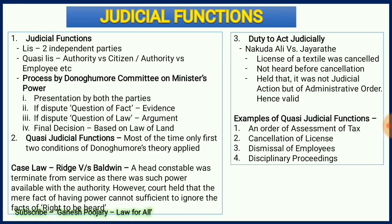The third category of functions is judicial functions. Three important aspects are: judicial functions, quasi-judicial functions, and duty to act judicially. There are two types under judicial functions: lis and quasi-lis. Lis occurs when two independent parties come before an administrative authority. Quasi-lis occurs when one party belongs to the authority and the other is a citizen or employee. As per the Donoughmore Committee, judicial functions require four processes: presentation by both parties, presentation of evidence for questions of fact, argument for questions of law, and a final decision based on the law of the land.